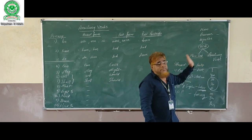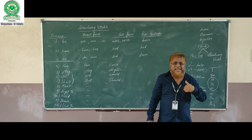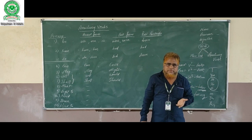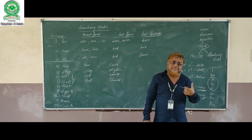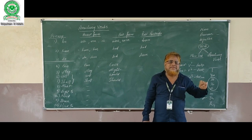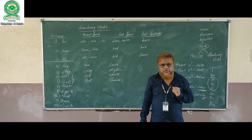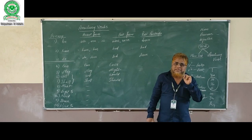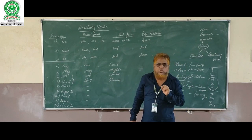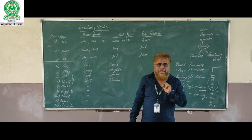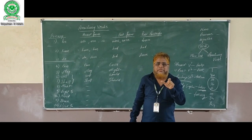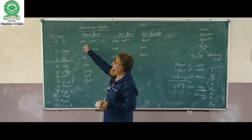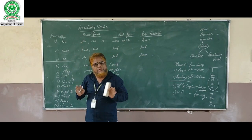But sometimes, these auxiliary verbs can also act as a main verb. When there is no main verb, it can also act as a main verb. For example, 'I am a student.' Here there is no main verb, no action verb, but there is 'am,' which means I am. So here, though it is an auxiliary verb, it is acting as a main verb.